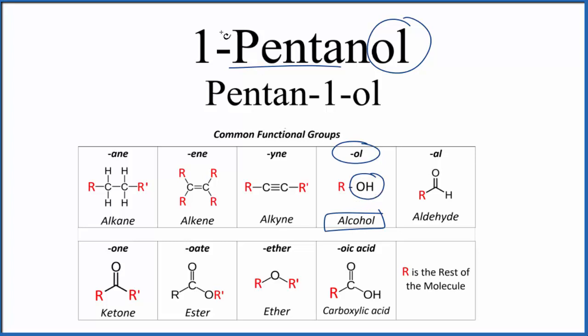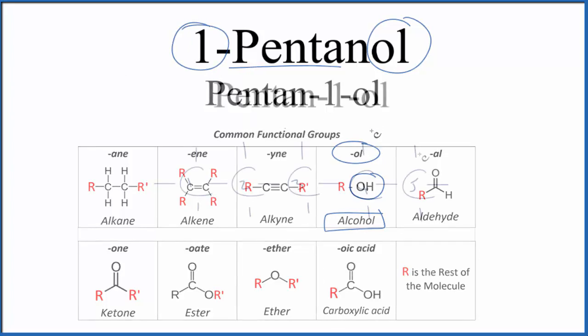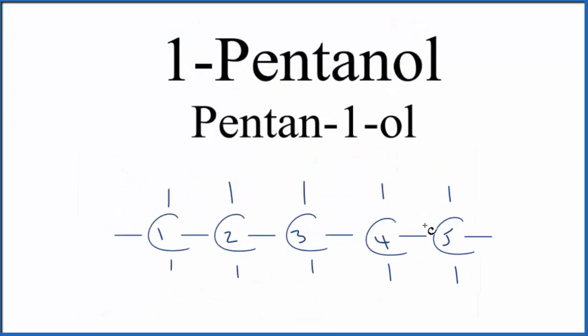That carbon will be the first carbon. Let's put a chain of five carbons up and number them. So this is our chain of five carbons. We have all single bonds. These lines go to hydrogens, although we don't really write them by convention.